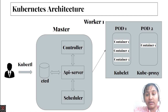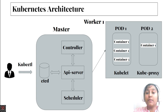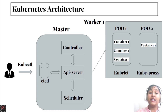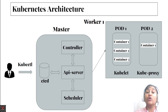Two of the most important things in this architecture are the API server and kubelet. The API server is in the master node and kubelet is in the worker node. The most important feature of the master node is the API server — API stands for Application Programmable Interface — and this interface manages all the worker nodes.